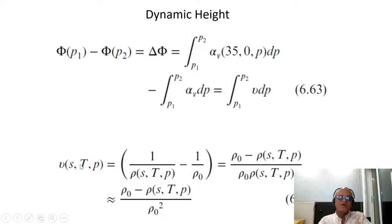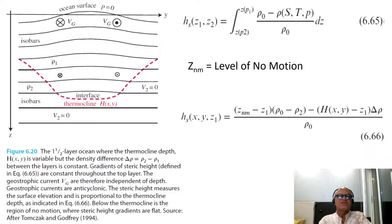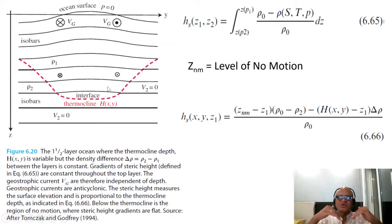Since ρ = ρ_0 + Δρ where Δρ is small, we can replace ρ_0 · ρ_STP with ρ_0 squared, making the expression a little simpler. We have a deep motionless ocean, and above that the thermocline is dipping down in this particular case, which means there is convergence. We will look at the subtropical gyre which I will show in a figure.